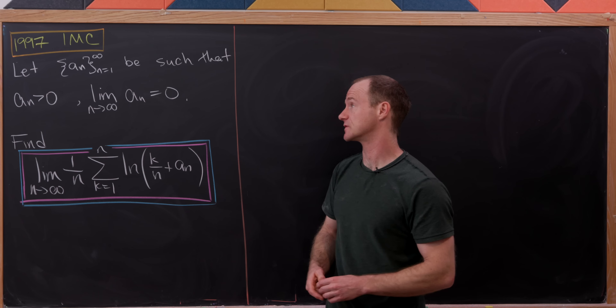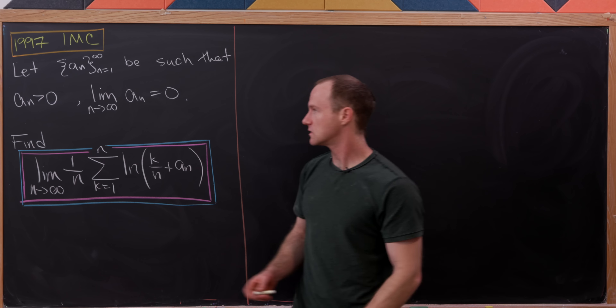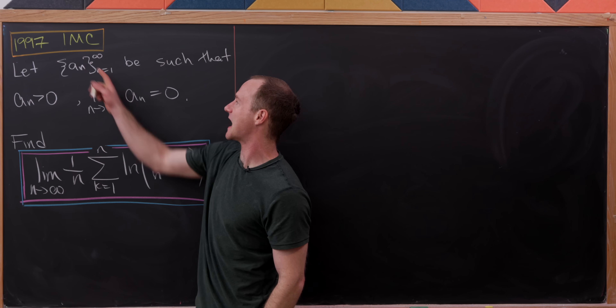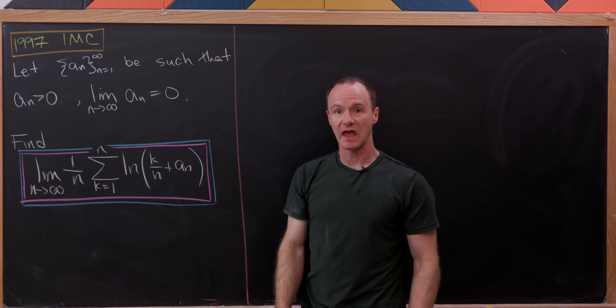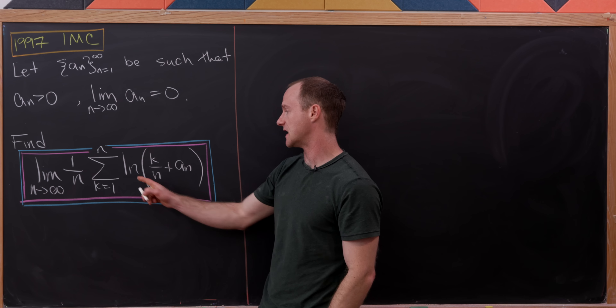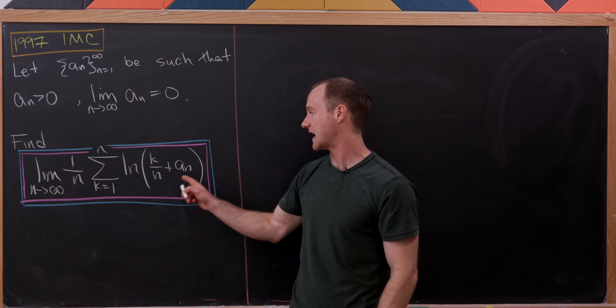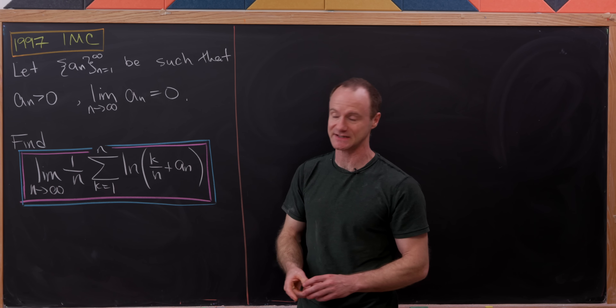Let's suppose that we have a sequence a_n, and it's any sequence as long as it satisfies two conditions: first, it has positive numbers, and second, its limit is zero. Our goal is to find the limit as n goes to infinity of one over n times the sum as k goes from one to n of the natural log of k over n plus a_n.